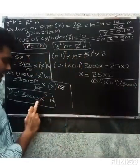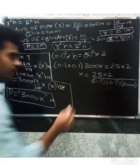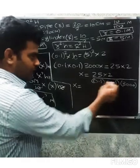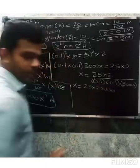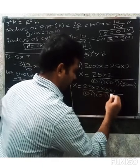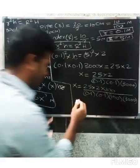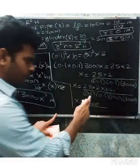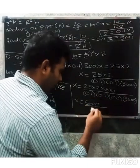So x equals 25 into 2 divided by 0.1 into 0.1 into 3000. To remove decimals, multiply numerator and denominator by 100. So 0.1 into 0.1 becomes 1 into 1 equals 1. Numerator: 25 into 2 into 100 equals 5000.